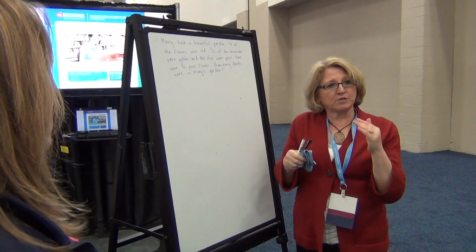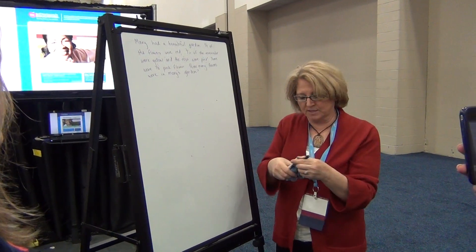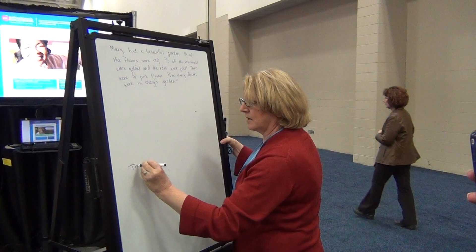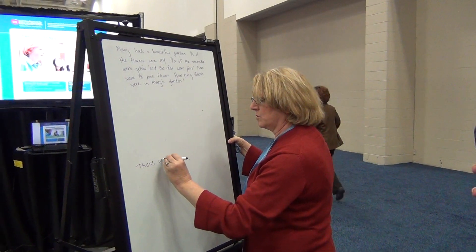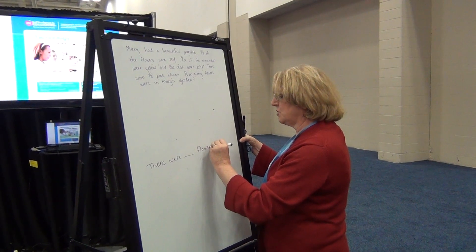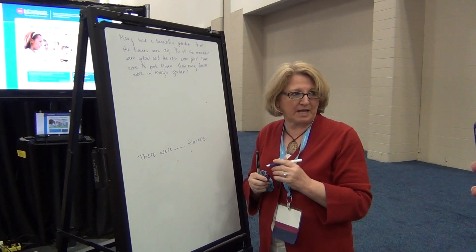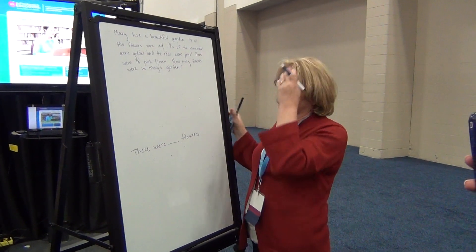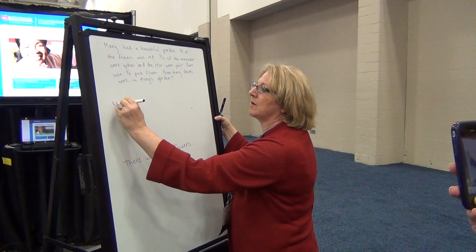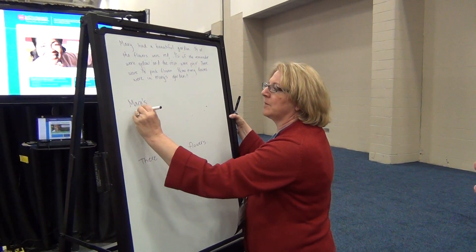So after the kids read it, the first thing they do is they write an answer statement that helps focus them on what they're looking at. 'There were blank flowers.' Because when kids get to the test, they answer a question — just not the one being asked — and that answer is there as a distractor. So who are we talking about? We're talking about Mary. Mary's what? Mary's flowers.